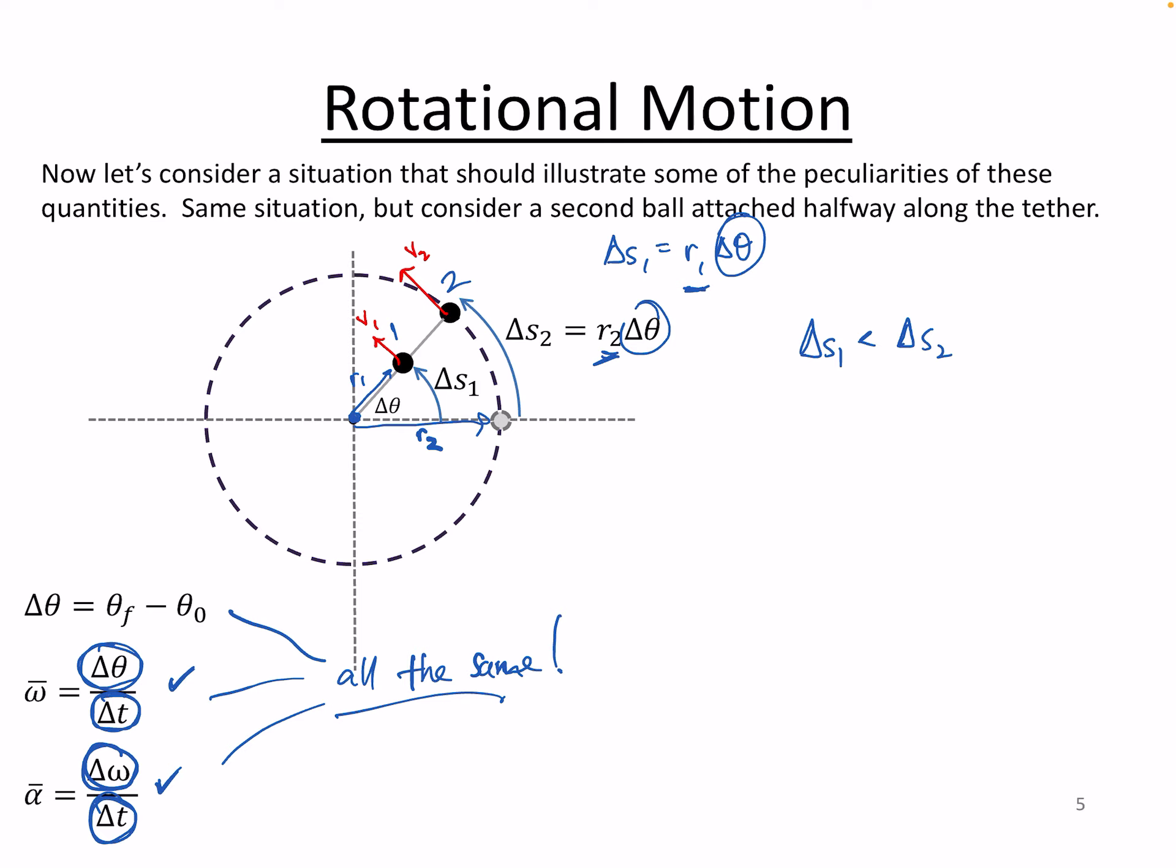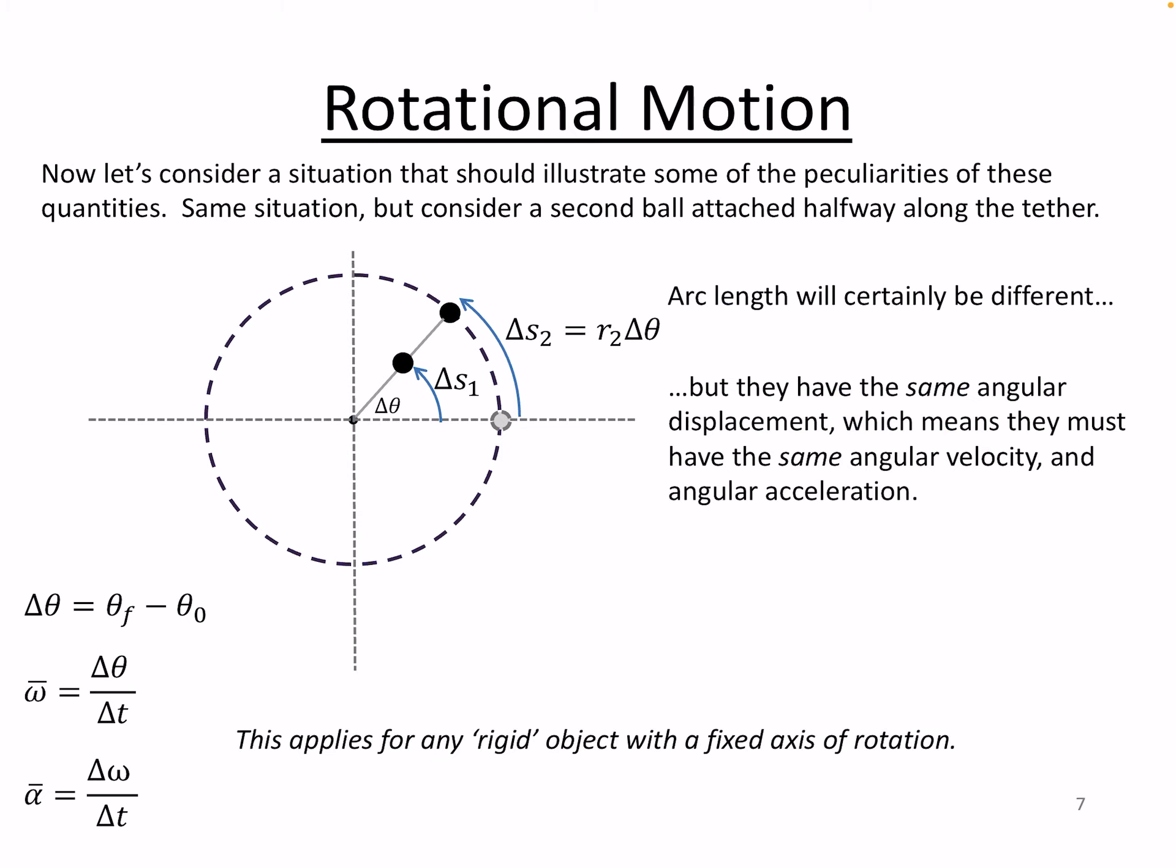Technically, it only applies when you have a rigid, quote-unquote, object. So here it's rigid because the string is taut. The example of a bicycle tire, it would be rigid because of all the spokes and being made out of steel, everything like that.